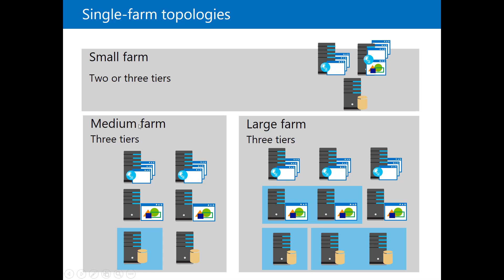Let's move on to medium farm. Medium farm is used for small or medium business. In that case you will start to have high availability between databases — if one of them fails, the other one will be up. So you will have at least two database servers, two front-end servers, and two application servers.